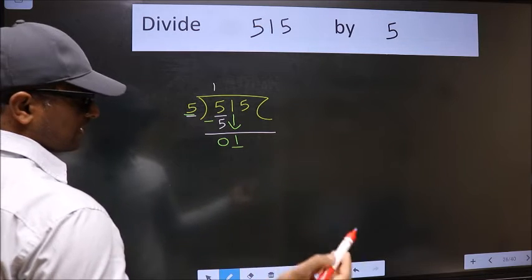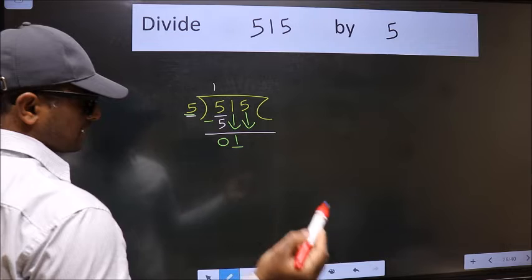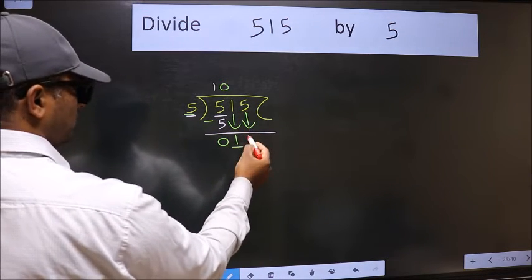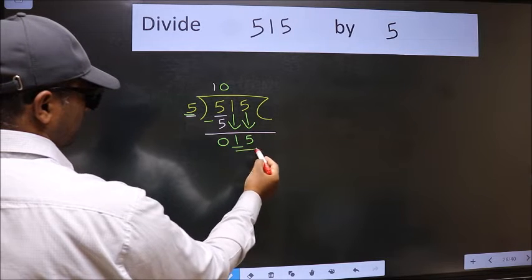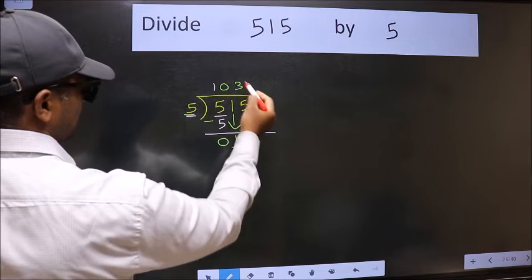So we should bring down the second number. And the rule to bring down the second number is we should put 0 here. Then only we can bring this number down. Now 15. When do we get 15 in the 5 table? 5 times 3 is 15.